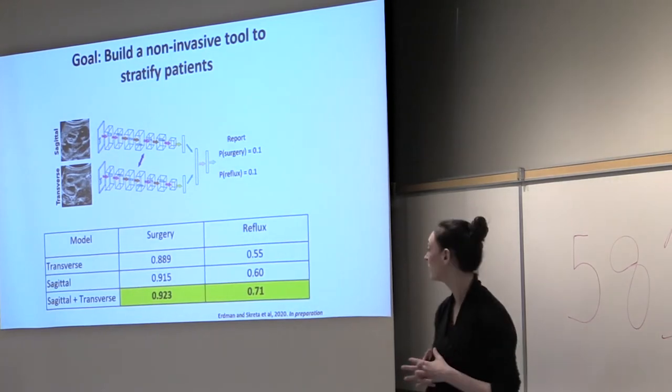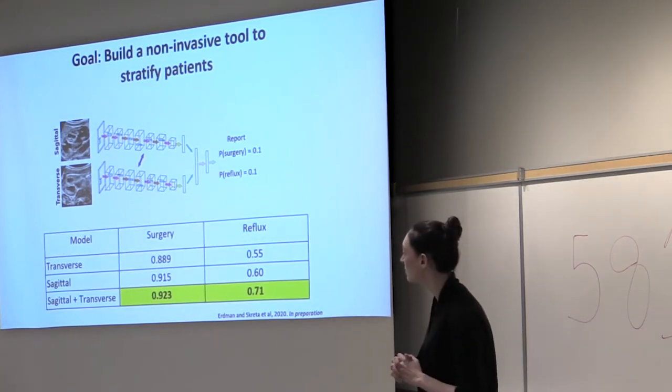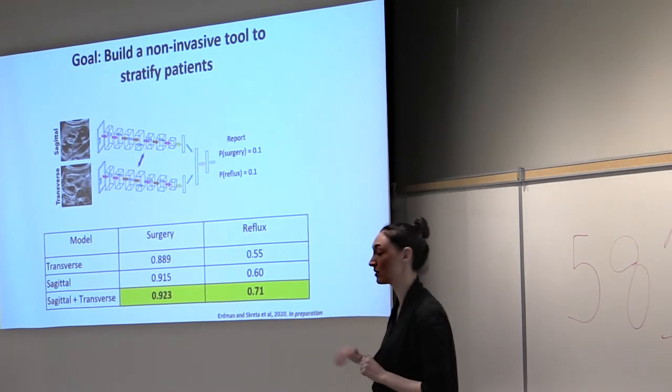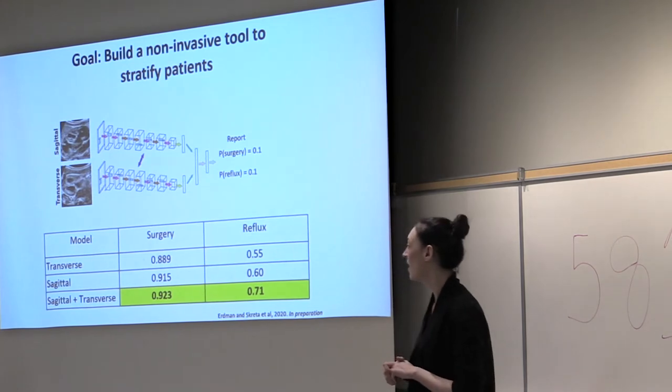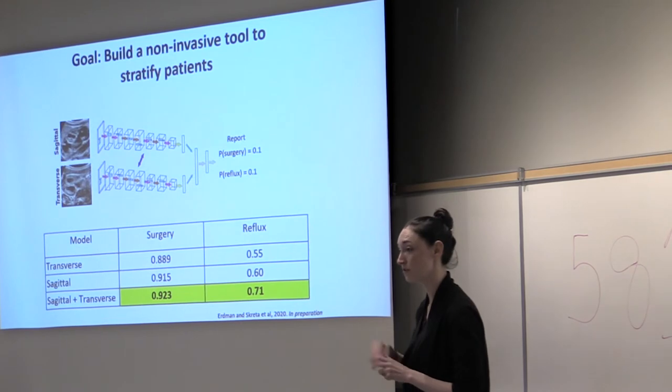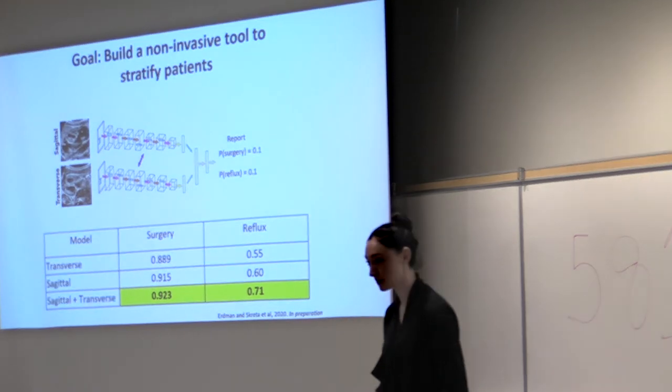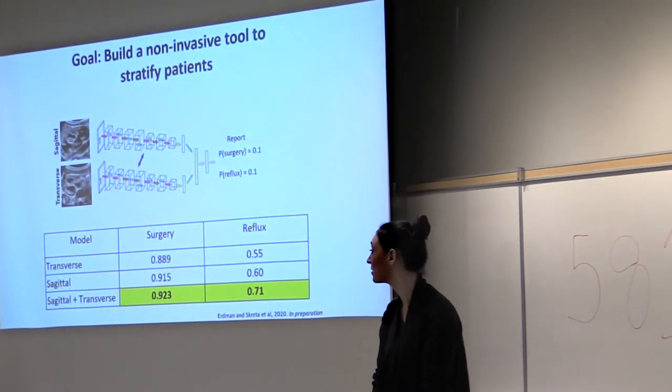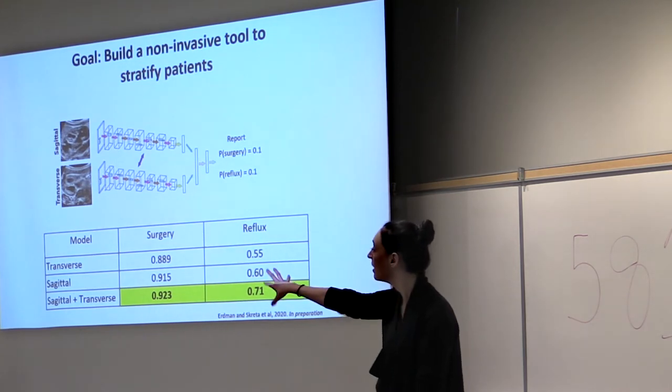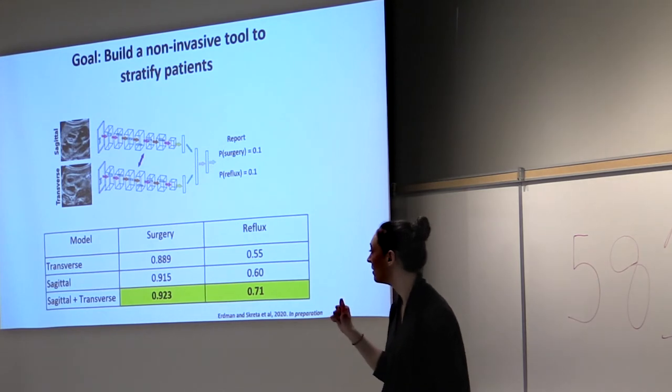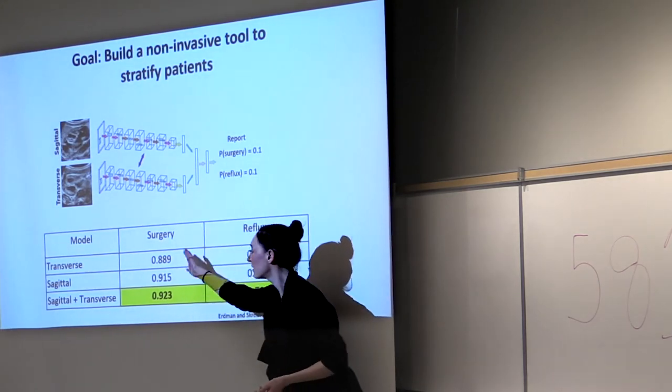So here's what we found for our surgery and reflux models. We found that in general we do a better job predicting with sagittal and transverse view. I'm sorry, I don't have all the confidence intervals ready to go, so I removed them all. What I will say for surgery, for surgical prediction, which we do better in than we do for reflux prediction, we find that these are not significantly different in terms of their predictive accuracy here. This is the area under the recall curve, and they're not significantly different from each other.